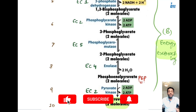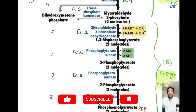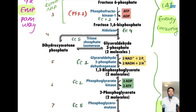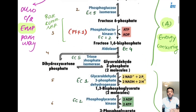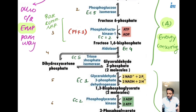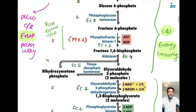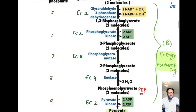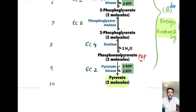You can understand glycolysis through a simple business analogy. Suppose you are setting up a mobile manufacturing company. First you have to build the company, hire employees, and gather required products — all of which requires investment, consuming your energy in the form of time and money. Similarly in glycolysis, energy means ATP. In the initial five steps — the energy consuming phase — we spend our ATP.